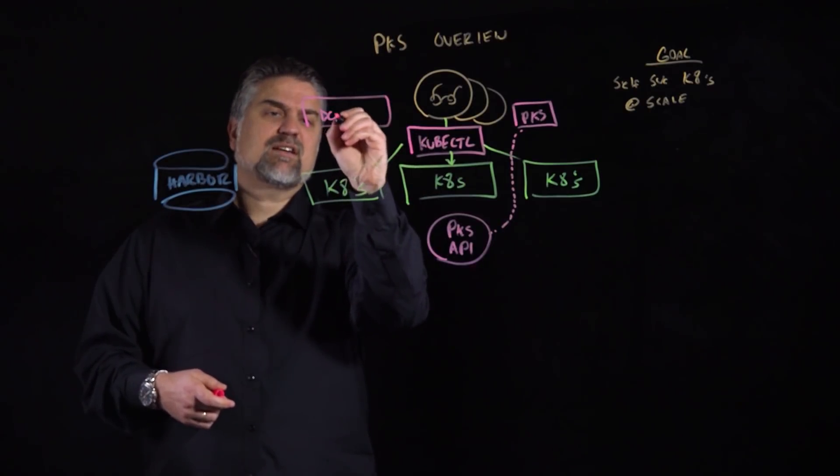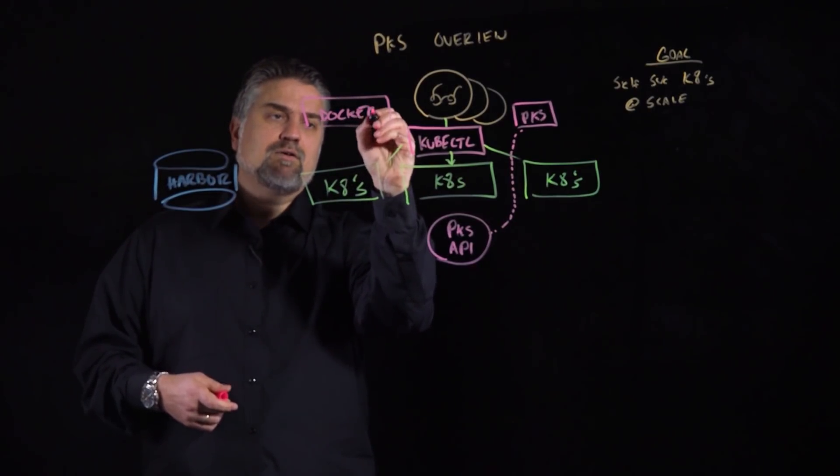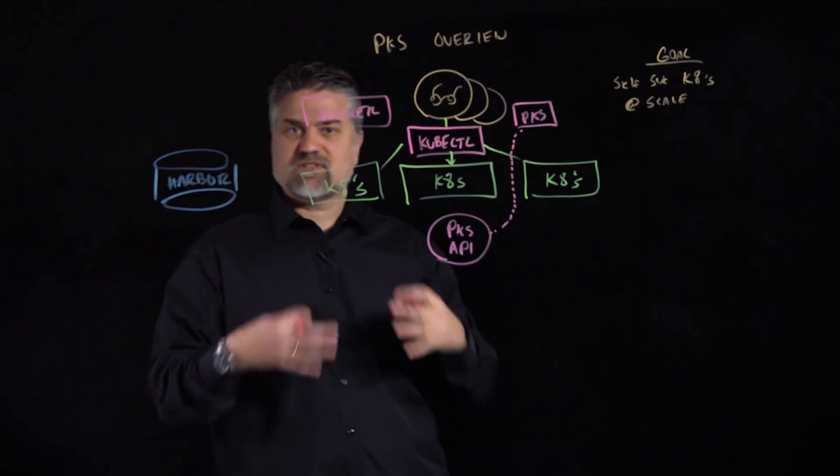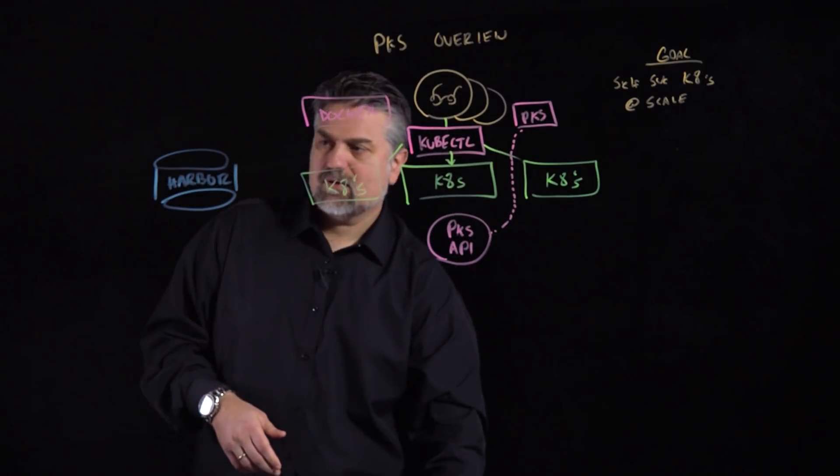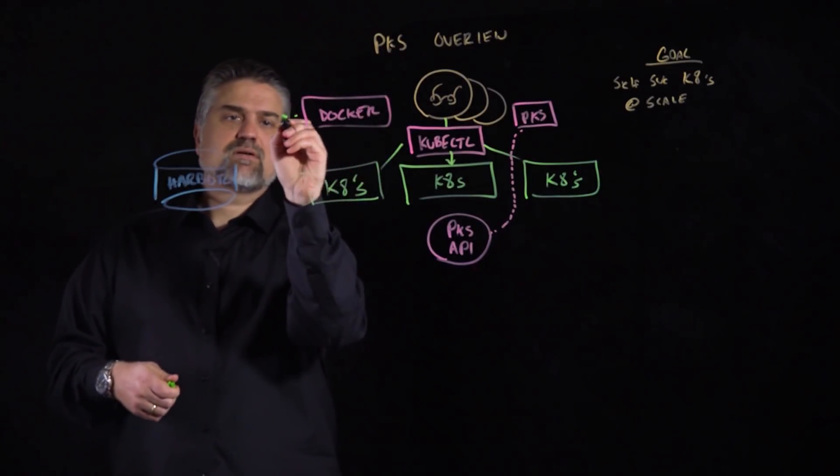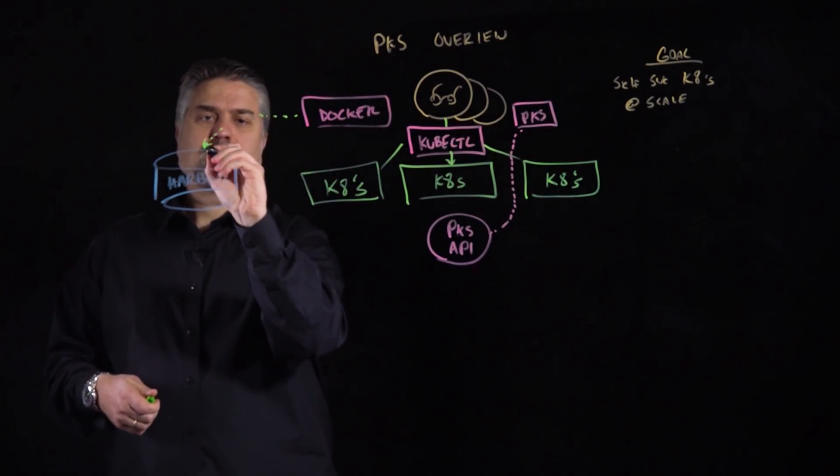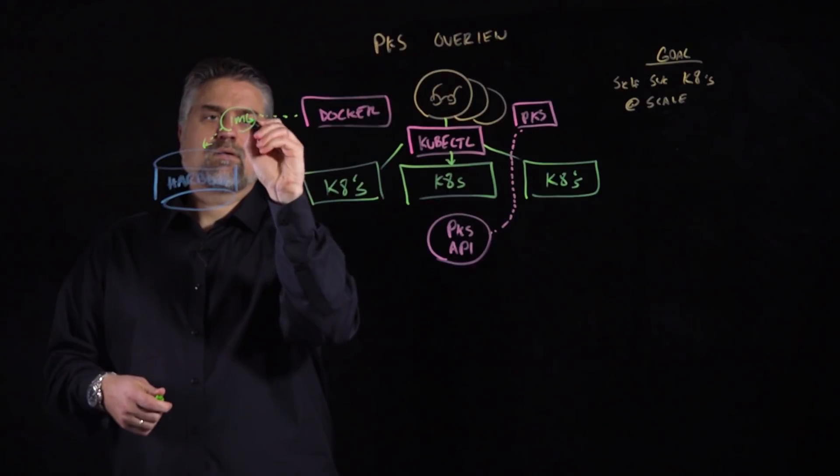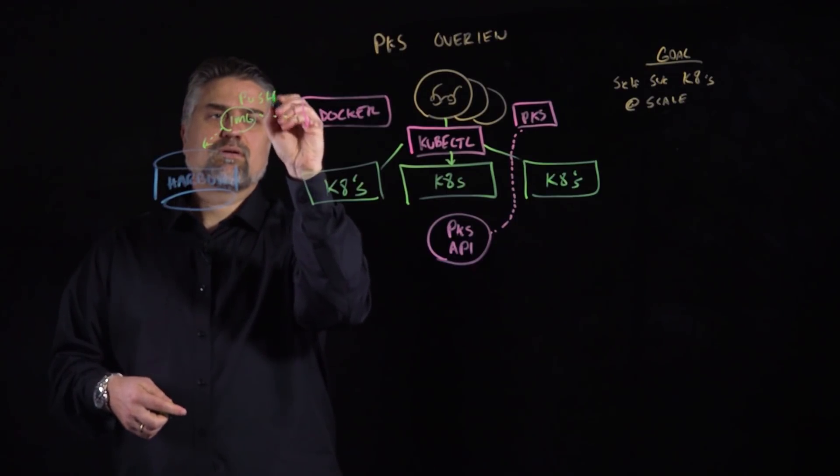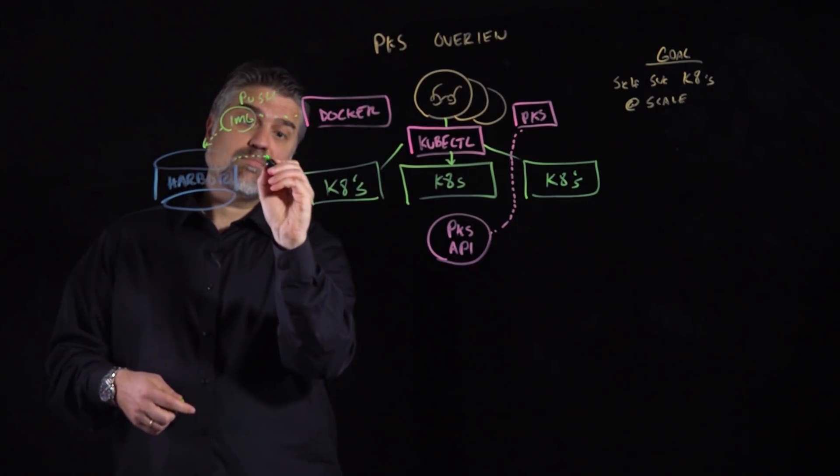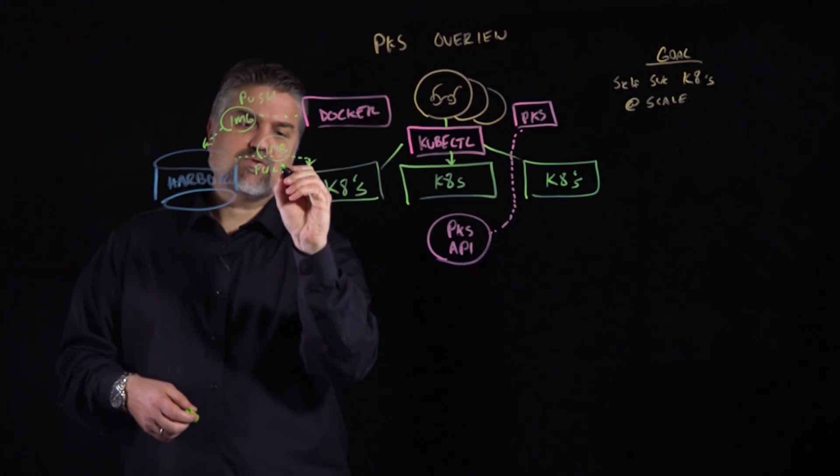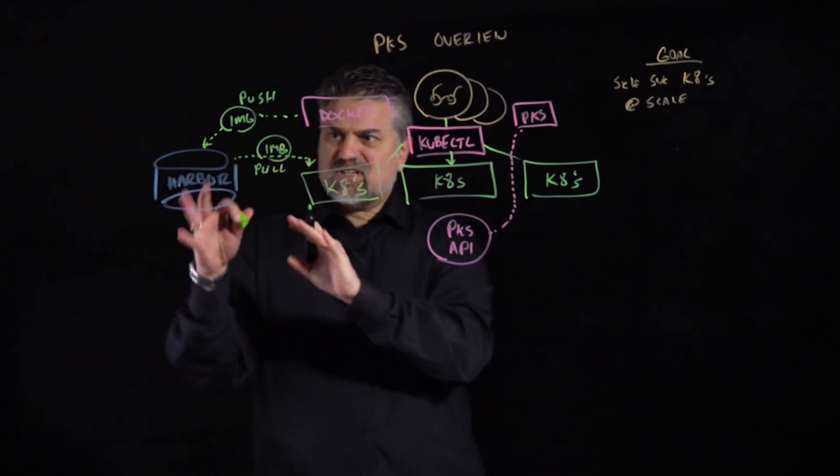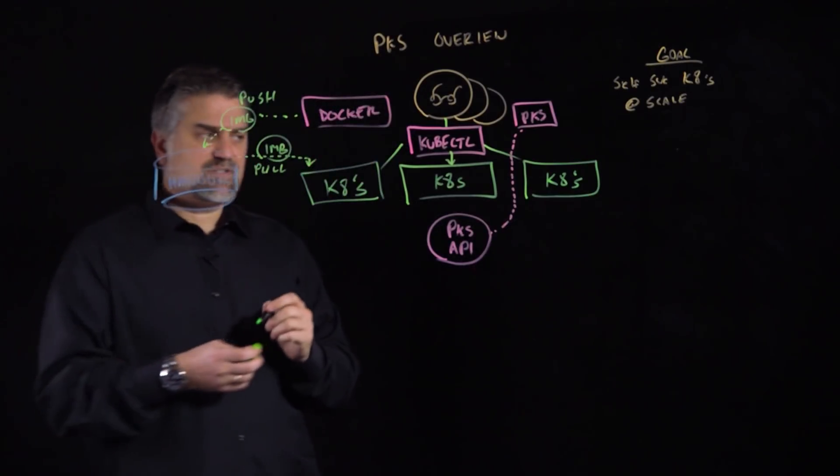Via something like the Docker CLI, which is another tool that our development teams are already familiar with, we can offer the capability to push images. We can do a push, or most importantly, when we need to actually run our images, we'll need to do a pull into our various Kubernetes clusters. So PKS is offering this key Harbor registry service.